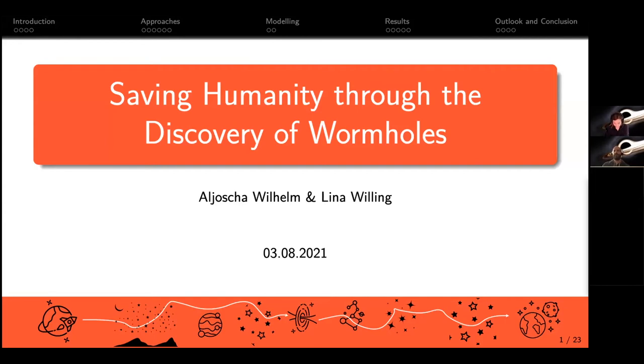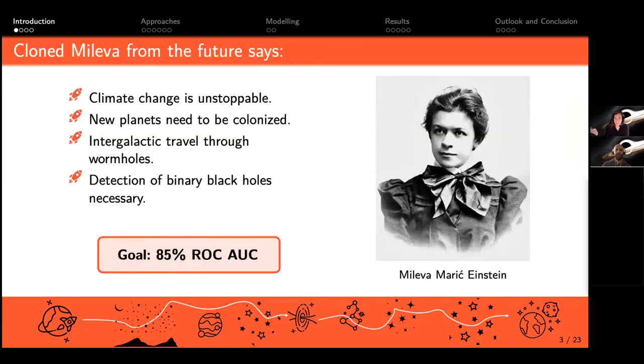So cloned Mileva from the future came to us and said climate change is unstoppable, new planets need to be colonized, intergalactic travel through wormholes will be possible, and the detection of binary black holes is necessary.